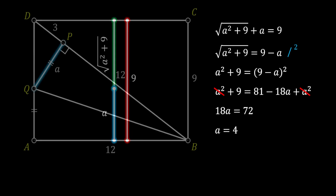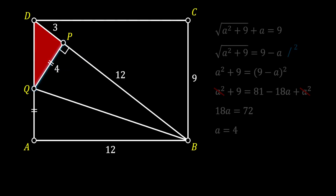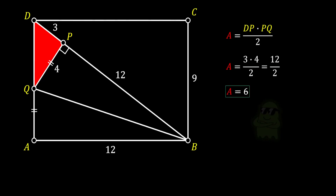A represents the other leg of our red triangle, QP. So now it's straightforward to find the area of this red triangle. Since it is a right triangle, its area equals the product of its legs divided by 2. Substituting our values — legs of 3 and 4 — we get that the red area equals 6 square units. And we have our solution.